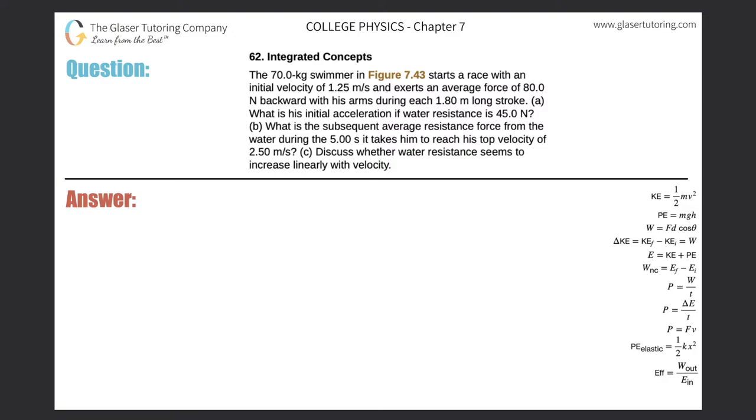Number 62, integrated concepts. The 70 kilogram swimmer in figure 7.43 starts a race with an initial velocity of 1.25 meters per second and exerts an average force of 80 newtons backward with his arms during each 1.8 meter long stroke. Letter A: What is his initial acceleration if water resistance is 45 newtons?